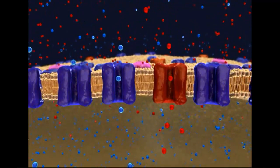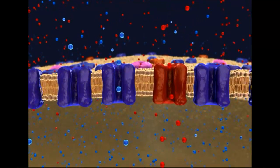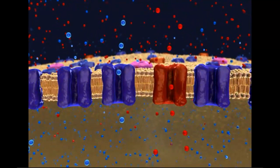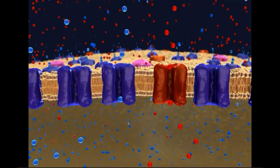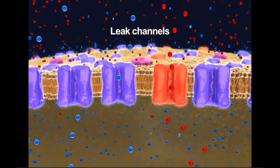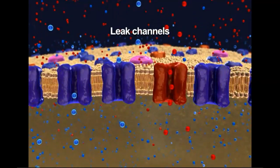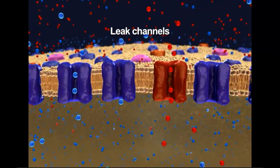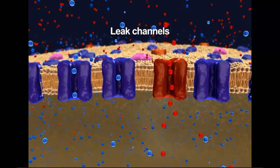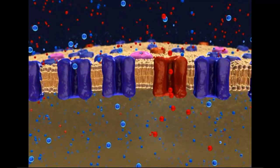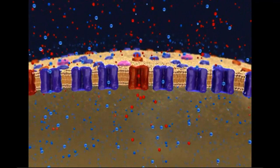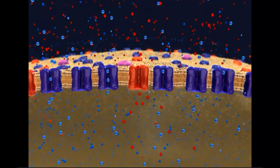Second, the resting membrane potential depends on the differential permeability of the plasma membrane to sodium and potassium ions. Leak channels in the plasma membrane allow sodium and potassium ions to diffuse down their concentration gradients. The membrane contains many more potassium leak channels than sodium leak channels.